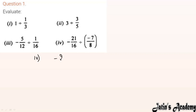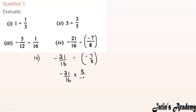Next we are having the fourth part. We are given minus 21/16 ÷ (minus 7/8). Keep minus 21/16 as such, divide converts to multiply, next term takes reciprocal to become 8/minus 7. The minuses cancel each other.